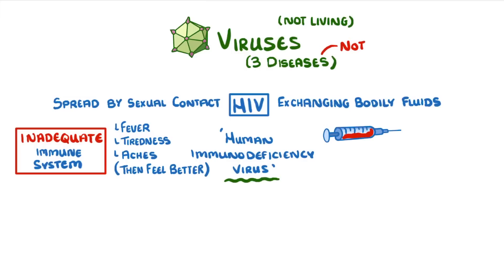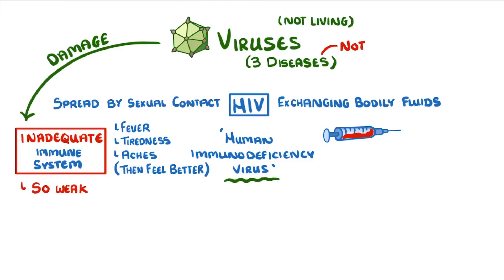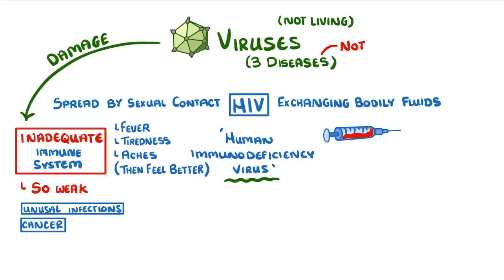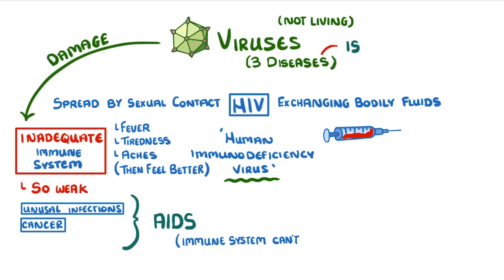However, inside their body the viruses are doing more and more damage to their immune system. At some point their immune system becomes so weak that they start to catch unusual infections and sometimes even get cancers. At this point we say that the person has developed AIDS, which is classed as a disease or syndrome in which the person's immune system can't cope anymore.